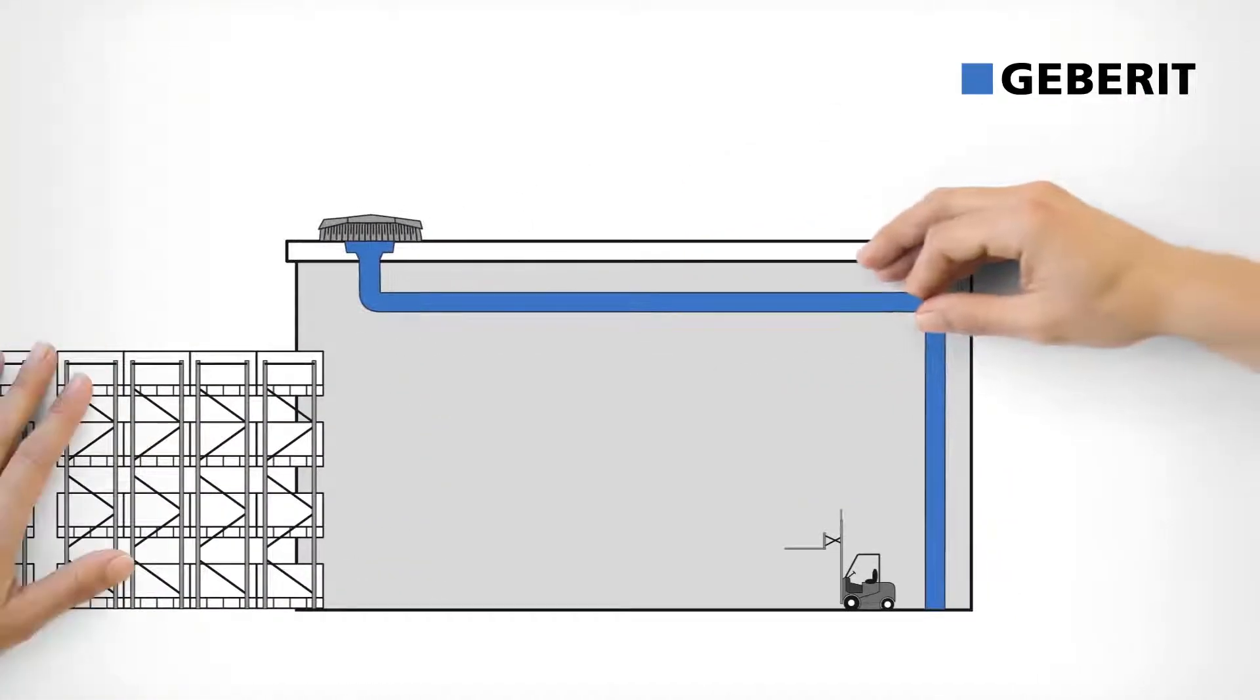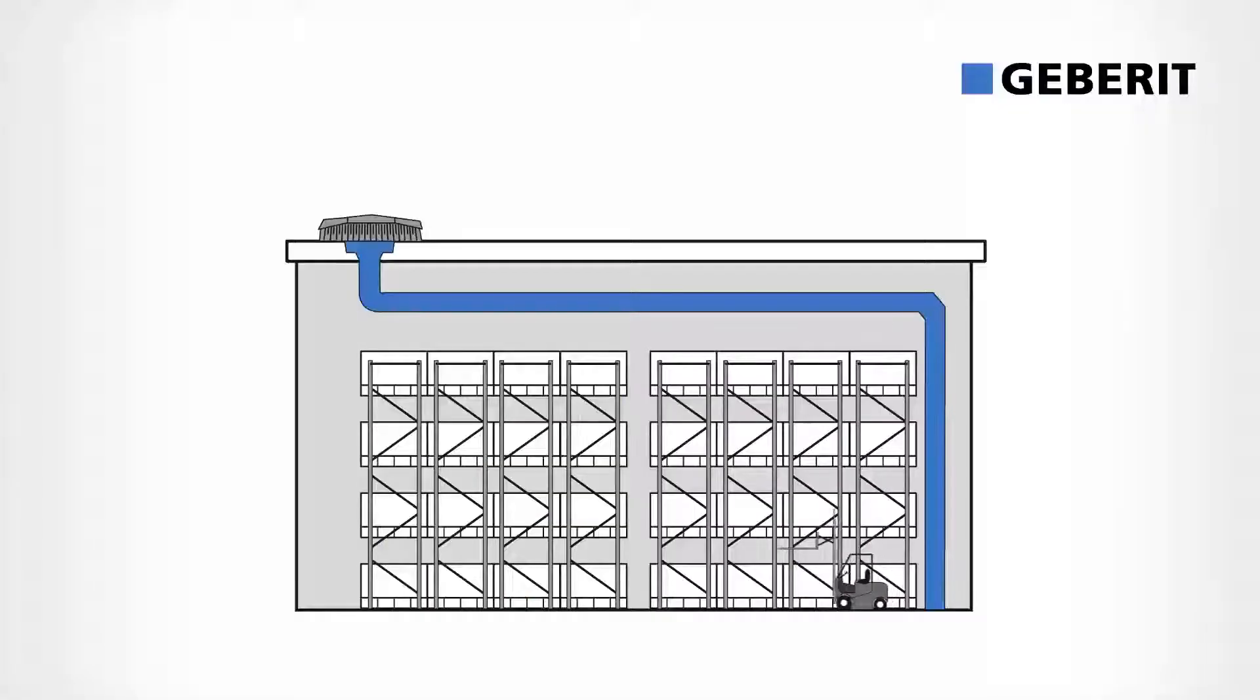That isn't the case with Geberit Pluvia. With this system, no slopes are created during installation. This ensures more efficient use of space.